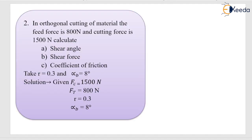Let us take another example. In orthogonal cutting, the feed force is 800 newtons and the cutting force is 1500 newtons. We need to calculate the shear force and coefficient of friction. Given: r = 0.3 and back rake angle alpha = 8 degrees. So Fc = 1500 N, Ft = 800 N.